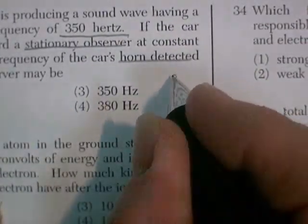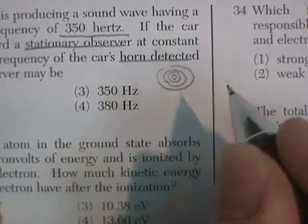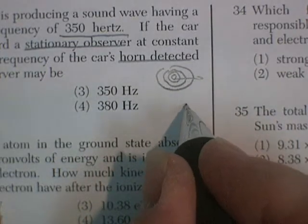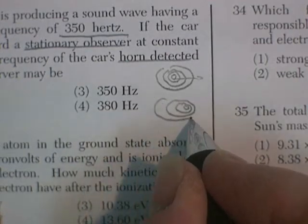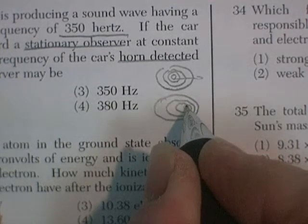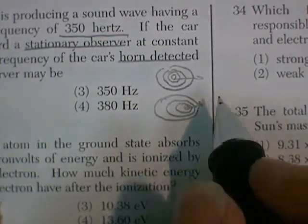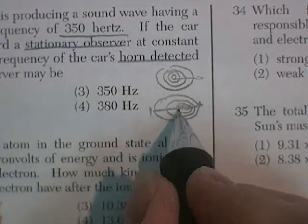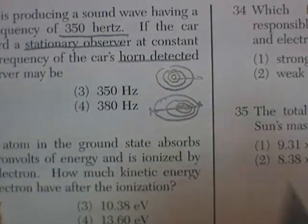Basically, an object makes waves of some frequency. But if the object happens to be moving, then basically it starts catching up with its own waves. So, in front of the object, the number of waves per second would be higher, or higher frequency, or higher pitch. And behind the object, the number of waves per second would be less, or lower frequency.